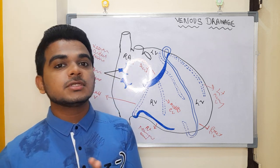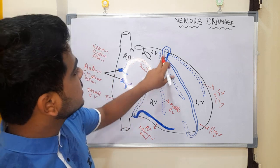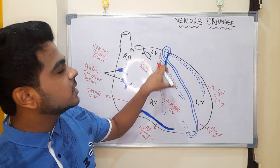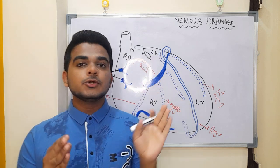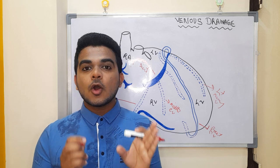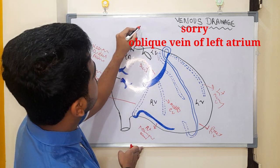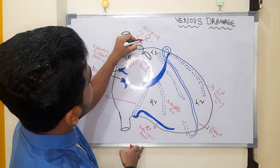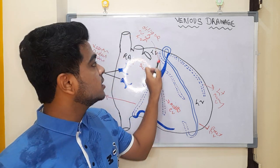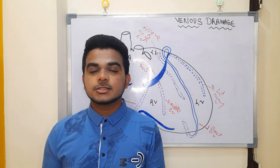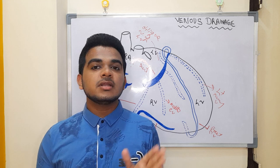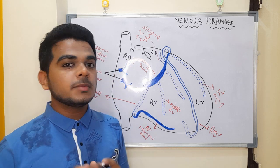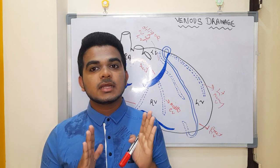Small, middle, great, right, and left marginal veins — five veins done. Now for the oblique vein of the left atrium: looking at the structure of the left atrium, this vein is going obliquely upward. Due to its oblique structure, remember it is the oblique vein for the left atrium — not for the left ventricle, which is a common mistake students make. Remember: oblique structure means oblique vein of the left atrium.